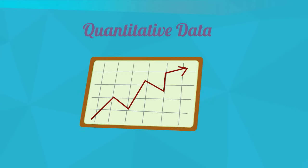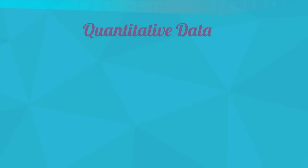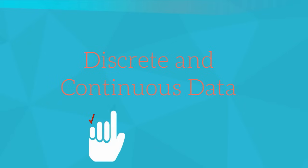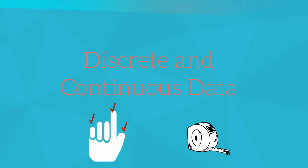Quantitative data can be graphed. If you count or measure, you are collecting quantitative data. There are two types of quantitative data: discrete and continuous. Discrete data is usually data you can count, and continuous data is usually data you measure. I have a separate video on these two types of data.